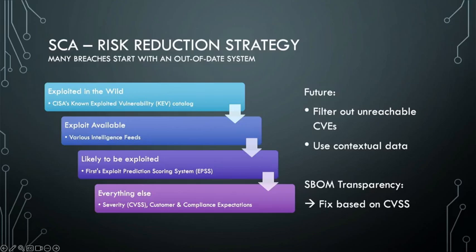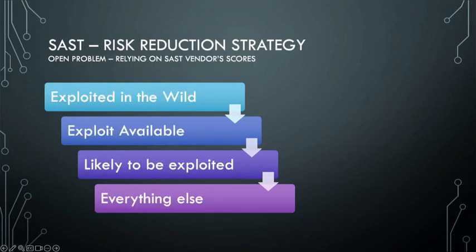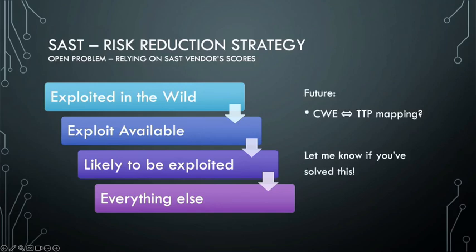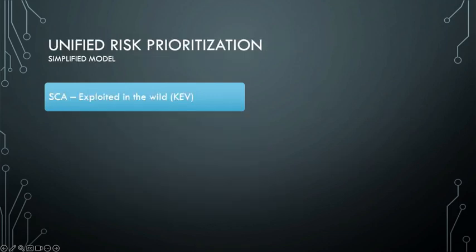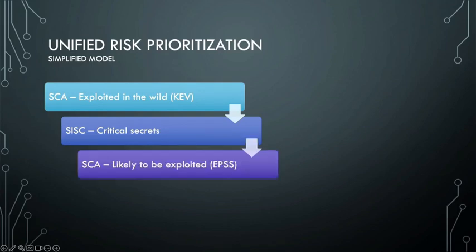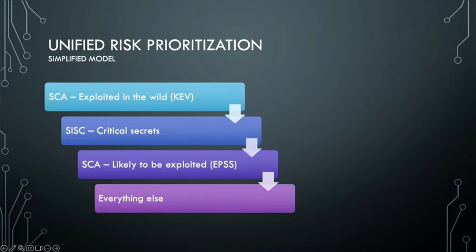The idea behind reachability is simple: say you use a crypto library and the RSA functionality is broken — if you don't actually use RSA, what's the harm of that CVE? That's the level of granularity we're talking about. The basic process of checking for exploitation in the wild still works. For unified risk prioritization, we tell our engineers: fix exploited-in-the-wild stuff first, then fix critical secrets, then likely-to-be-exploited vulnerable dependencies, then everything else. 'Everything else' is more complex, and you'll need to find your own weighted prioritization scheme.